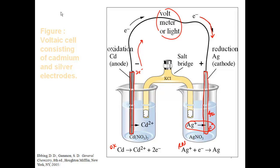For electricity to flow, there must be a complete circuit. The electrodes are connected by a wire, and I also need a salt bridge to connect the two flasks. The salt bridge completes the circuit, but it also does something else to allow the process to happen — it keeps things electrically neutral and allows ions to flow between the half-cells.